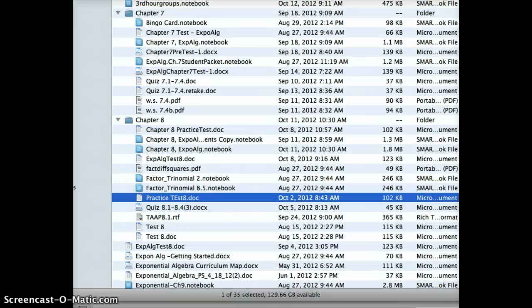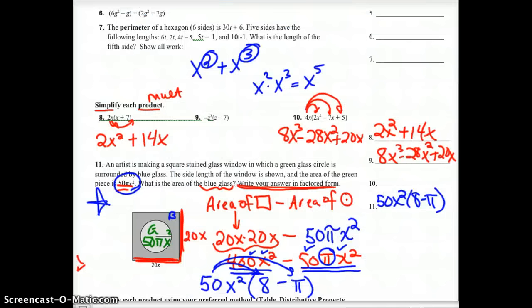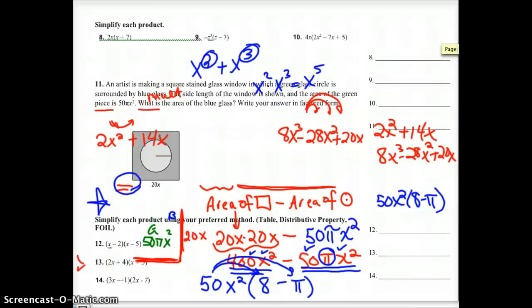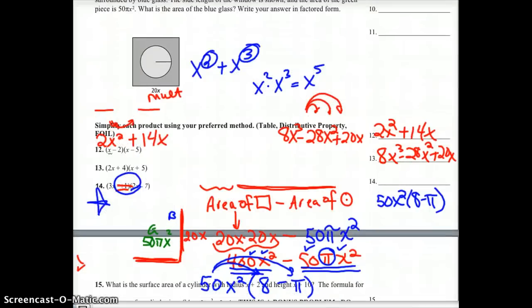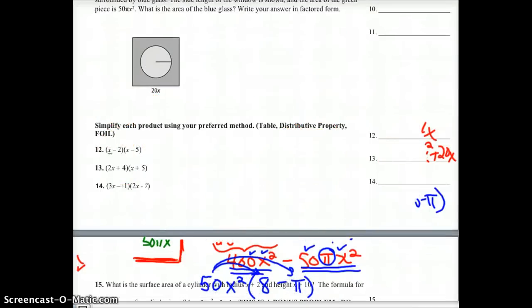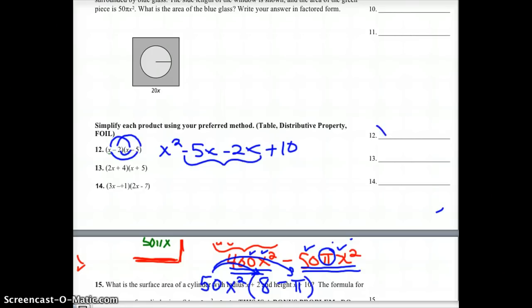Next one up would be number 12, 13, and 14. Nice, easy table distributive property or foiling. And I like to foil, so that's what I'm going to use. That's what most of you have been using. So let's have at it first. Outsides, insides, and last. Negative times a negative as a positive. Combine your like terms, leaving x squared minus 7x plus 10.